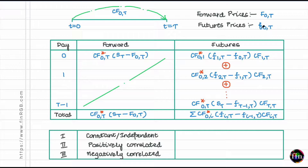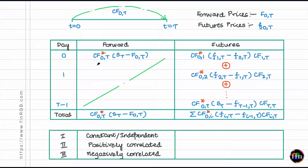I want you to undertake two positions: one in the forward market at the quoted forward price, and one in the futures market at the quoted futures price — both long positions but in different quantities of the underlying asset. In the forward market, take a long forward position on units equal to the capitalization factor from 0 to T, computed using interest rates prevailing at t=0. Capitalization factors computed at t=0 are marked with a red asterisk, meaning they are known to us at t=0.